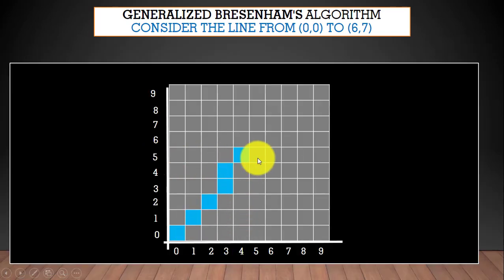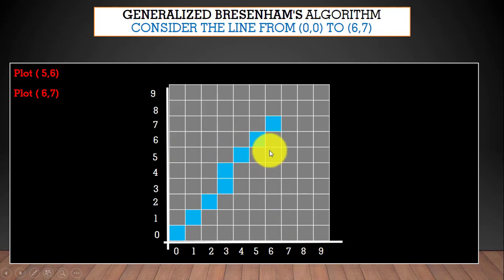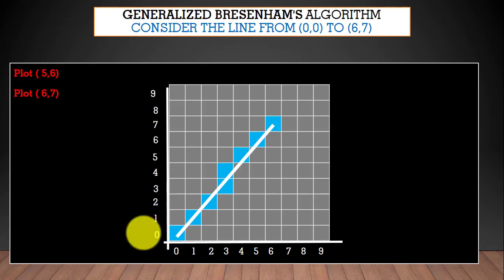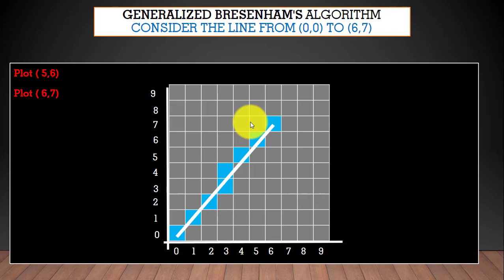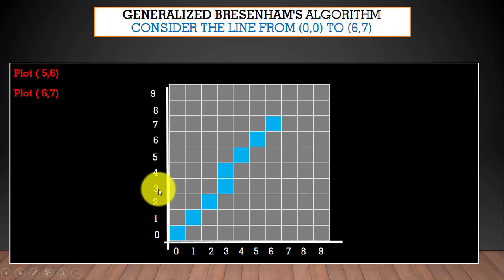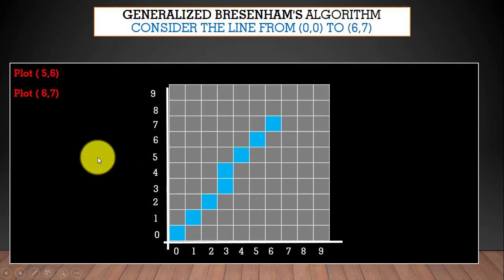Continuing, we get the next point (5, 6), and then the final point (6, 7). So the line from (0,0) to (6,7) is drawn successfully using the Generalized Bresenham's Line Drawing Algorithm. Using the simple Bresenham's algorithm there is an error — it would only plot points like (0,0), (1,1), (2,2), (3,3), (4,4), (5,5), (6,6), (7,7). The generalized algorithm correctly plots all the required points. That's the difference between the two algorithms. Thanks for watching.